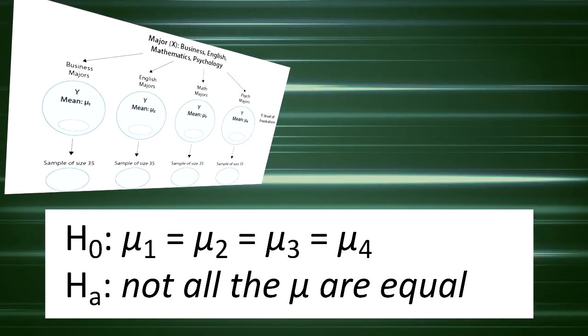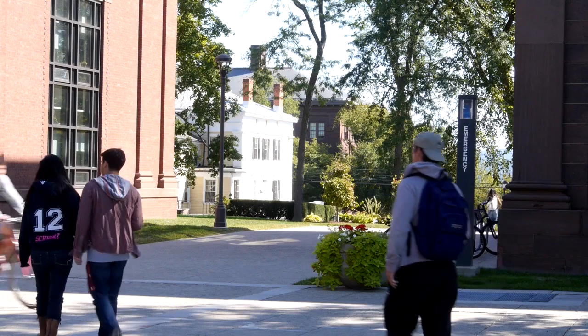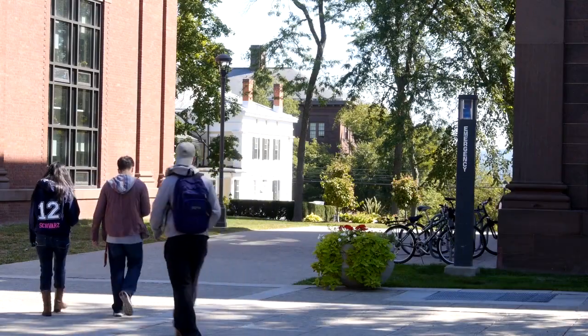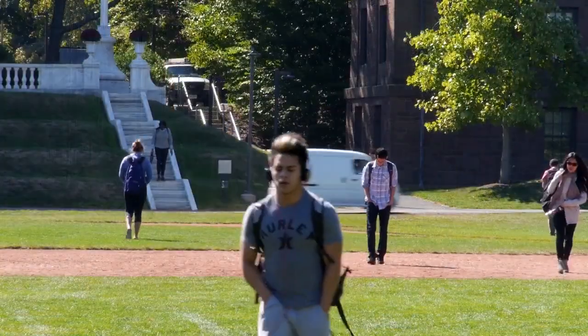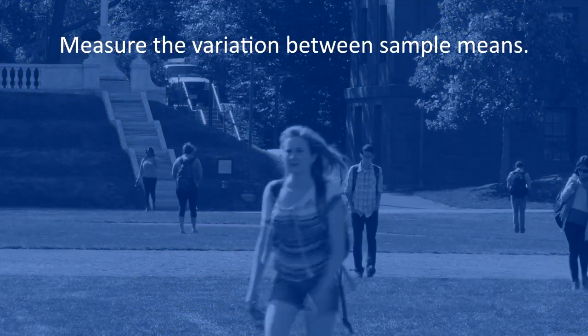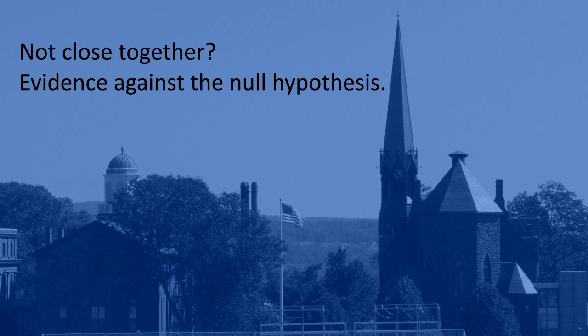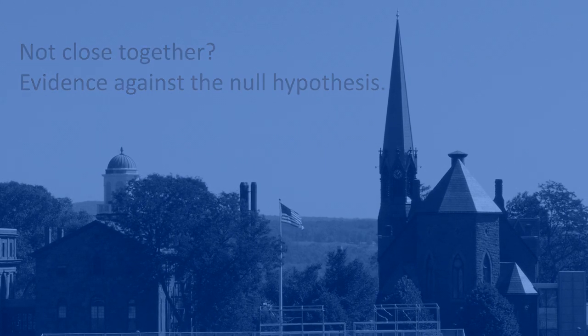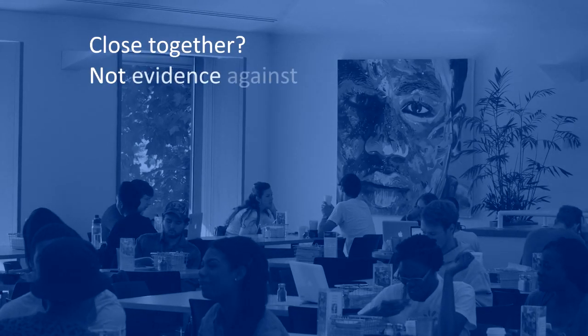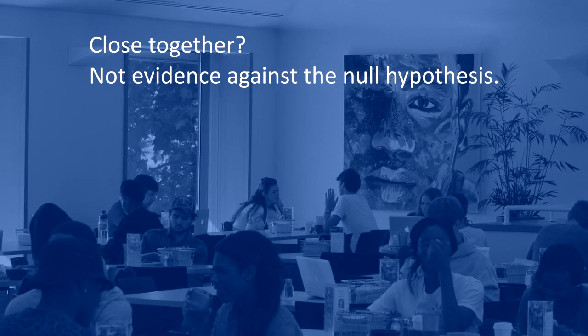For now, let's think about how we would go about testing whether the population means are equal. We could calculate the mean frustration level for each major and see how far apart those sample means are, or in other words, measure the variation between the sample means. If we find that the four sample means are not all close together, we'll say that we have evidence against the null hypothesis. And otherwise, if they are close together, we'll say that we do not have evidence against the null hypothesis. This seems quite simple, but is this enough?